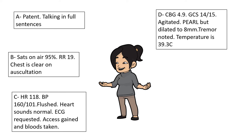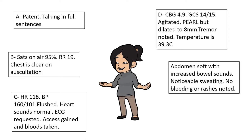Looking at D: capillary blood glucose is 4.9. GCS is 14 — she's a little agitated and confused. Pupils are equal and reactive but dilated to 8 mm, and she has a tremor in her hands. Temperature is 39.3°C. Abdomen is soft but with increased bowel sounds. She's quite sweaty, no rashes, no bleeding.